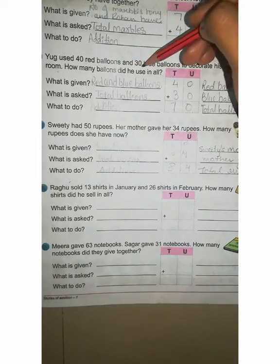What to do? Now what do we have to do? What is asked here? Use in all. How many balloons did he use in all? It means total asked. To do addition. Write addition.